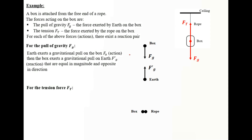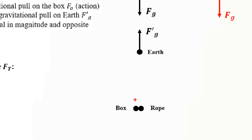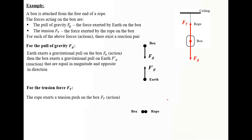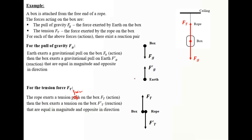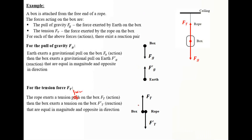For the tension force, the two bodies concerned are the box and the rope. The rope exerts a tension force on the box, upward. Then the box exerts a tension force on the rope, F'_T, downward, which is the reaction. Both are of the same type, acting at the same time on different bodies, equal in magnitude and opposite in direction.